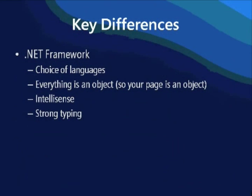Let's talk about a few of the differences you might encounter if you start building an ASP.NET application compared to what you're used to with PHP. You've got a choice of languages with the .NET framework — you have to decide whether you want to build in C# or VB.NET, or one of the other languages for which a compiler exists that can target the .NET framework. In the .NET world, everything is an object. Your page is an object, and each page that you write is a class in its own right derived from the page class.